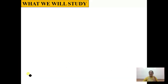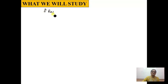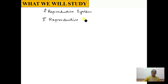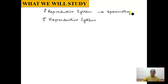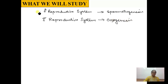Now let me discuss what you are going to study in this chapter and in which order. First you will study the structure of the male reproductive system, then the structure of the female reproductive system. After that, you will study the formation of gametes — the male gamete is formed by a process called spermatogenesis, and the female gamete is formed by oogenesis.